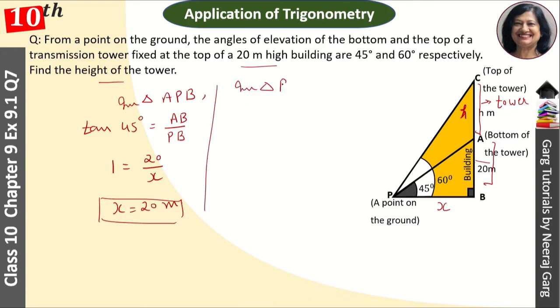In the big triangle PBC, we have tan 60 degree is equal to BC upon PB. Tan 60 degree value is root 3. BC is h plus 20 - this is the total from here to here - so this is h plus 20 upon x.